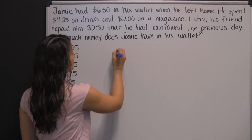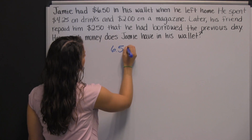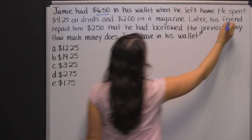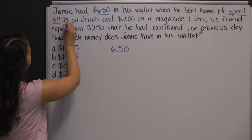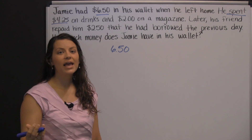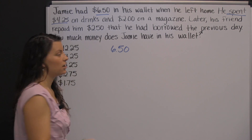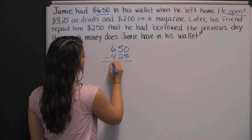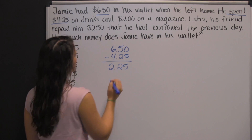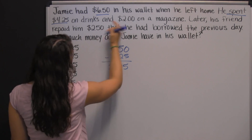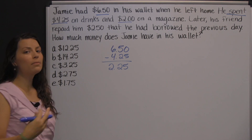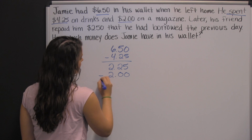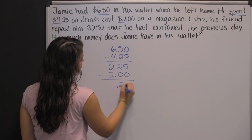He's starting with six dollars and fifty cents. Then he spent four dollars and twenty-five cents, which means we need to take away four twenty-five from the six fifty — so we subtract. That's two dollars and twenty-five cents. And two dollars on a magazine — that's more money that he spent, so we need to take away another two dollars, which leaves him with just twenty-five cents.